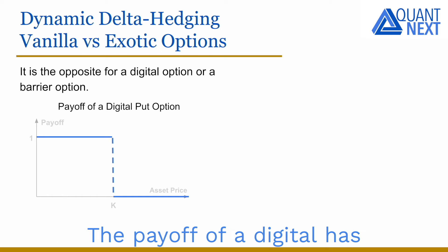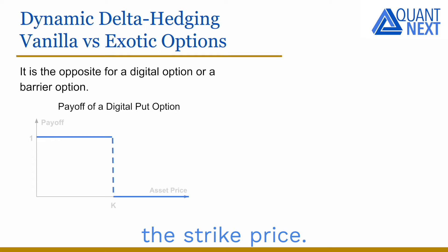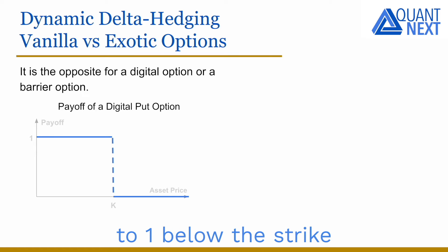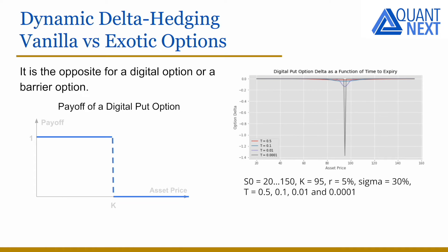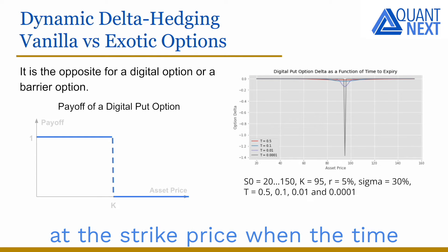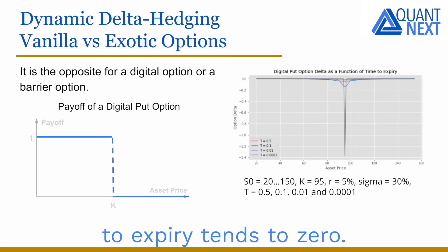The payoff of a digital has a discontinuity around the strike price. For a digital put, it is equal to one below the strike and equal to zero above. As a consequence, the delta will tend to minus infinity at the strike price when the time to expiry tends to zero.